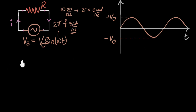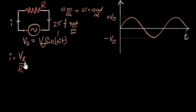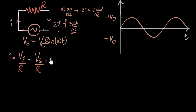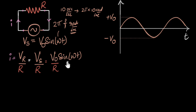From Ohm's law, the current equals voltage divided by R — specifically, the voltage across the resistor divided by the resistance. We need to be careful: it's the voltage across the resistor divided by R, not just any voltage. But in our example, the voltage across the resistor happens to be the source voltage. Since we know our source voltage is V naught sine omega t, our current is simply V naught sine omega t divided by R. And there we have found our current directly from Ohm's law.